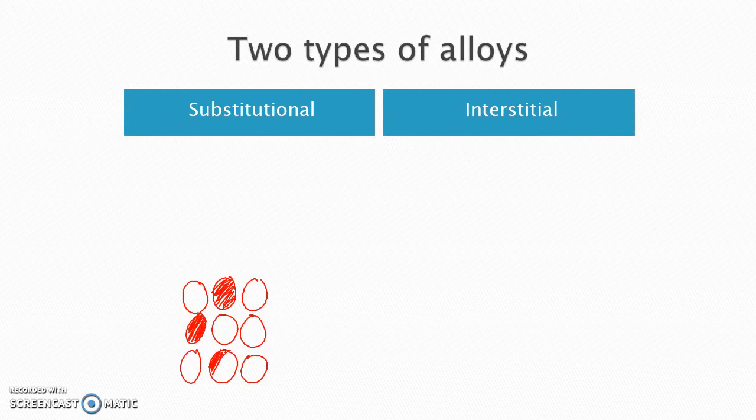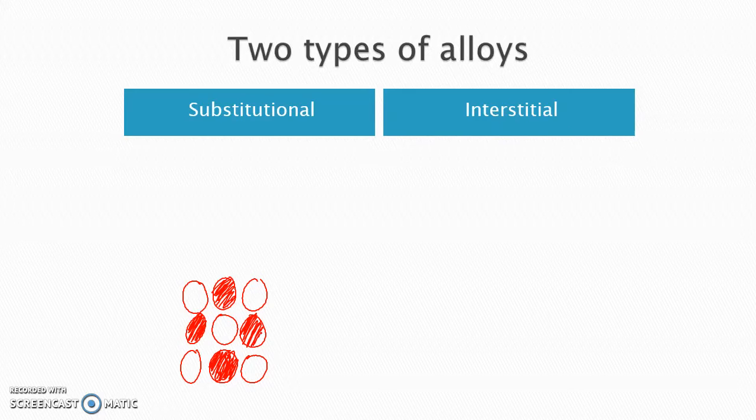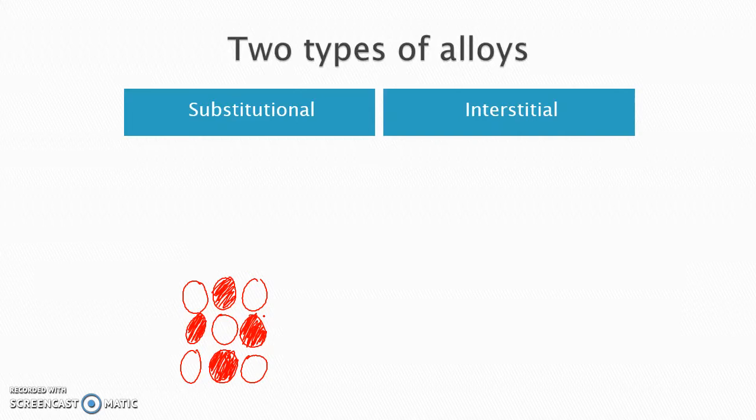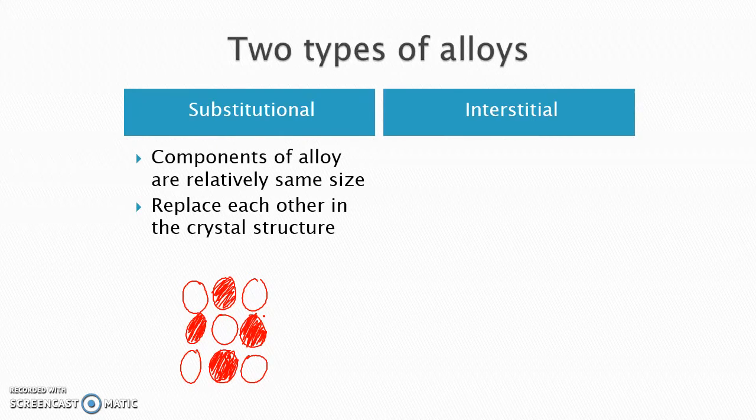So you mix them in so that you have the new metal kind of taking the place of the old metal in the structure. This happens exclusively when they are very similar in size. So if you have two metals mixed together that are really close to the same size, so same number of energy levels, same kind of similar masses - so when you have relatively the same size atoms, they're just going to replace one another. So literally substitute one in for the other.